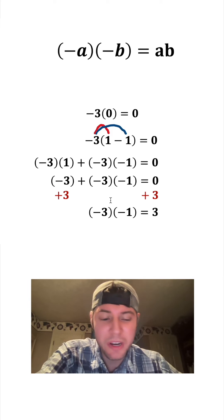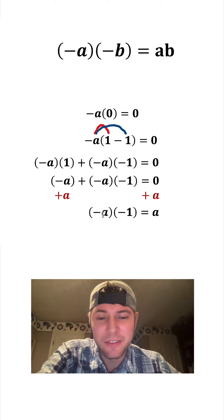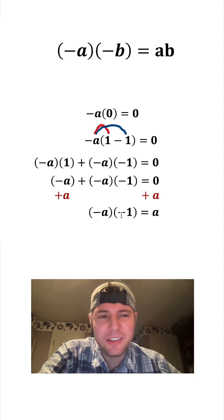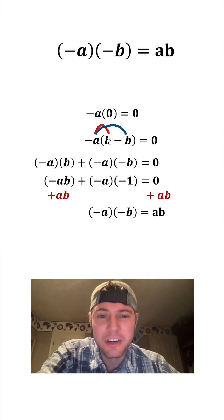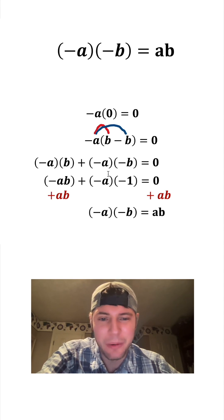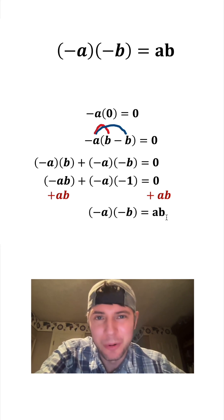But it's a specific case. We are able to change this negative 3 into a negative A. This is still true. Negative A times negative 1 is A. This is still only referring to negative 1. Well, this 1 minus 1 here, we didn't have to do 1 minus 1. We could have done B minus B. And now you can see what that would lead to is negative A times negative B equals positive AB, which is what we were trying to prove. How exciting.